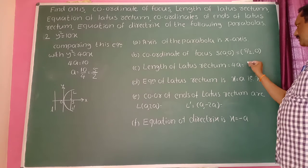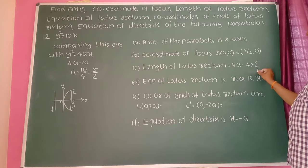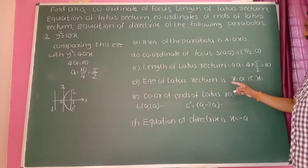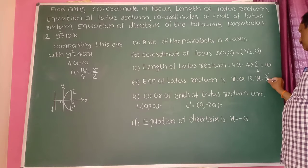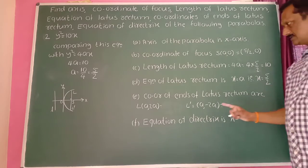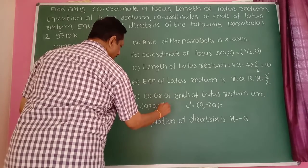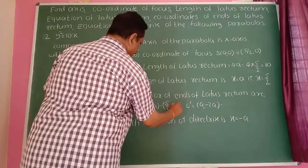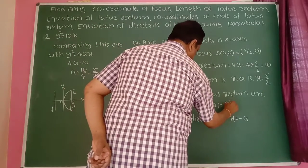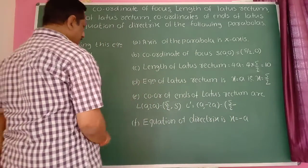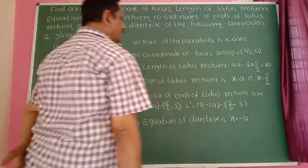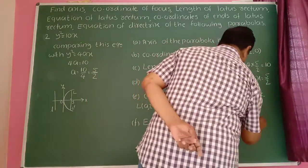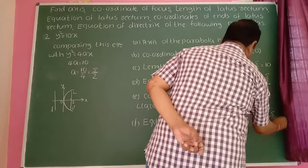The length of the latus rectum is 4a = 4 × 5/2 = 10. The equation of the latus rectum is x = a = 5/2. The coordinates of the ends of the latus rectum: L = (5/2, 5) and L' = (5/2, −5). The equation of the directrix is x = −a = −5/2.